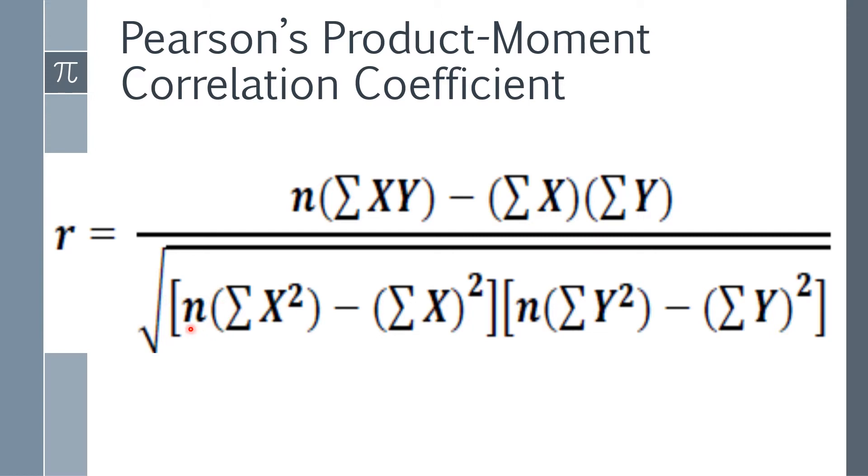n, sample size, multiplied by the summation of x squared minus the summation of x that will be squared, multiplied by summation of y squared multiplied by the sample size minus the square of the summation of y.